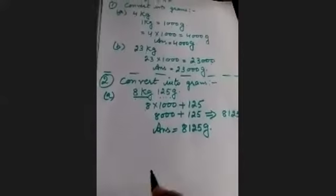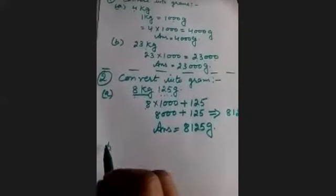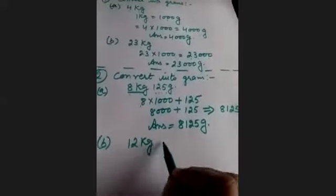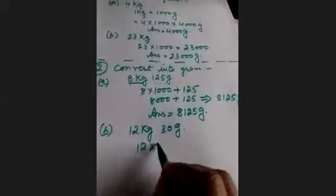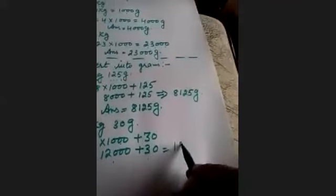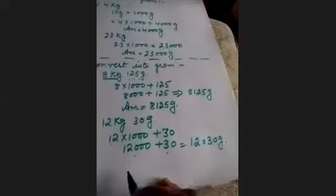Next is Part B: 12 kg and 30 grams. 12 × 1000 + 30 = 12,000 + 30 = 12,030 grams. Our answer is 12,030 grams.